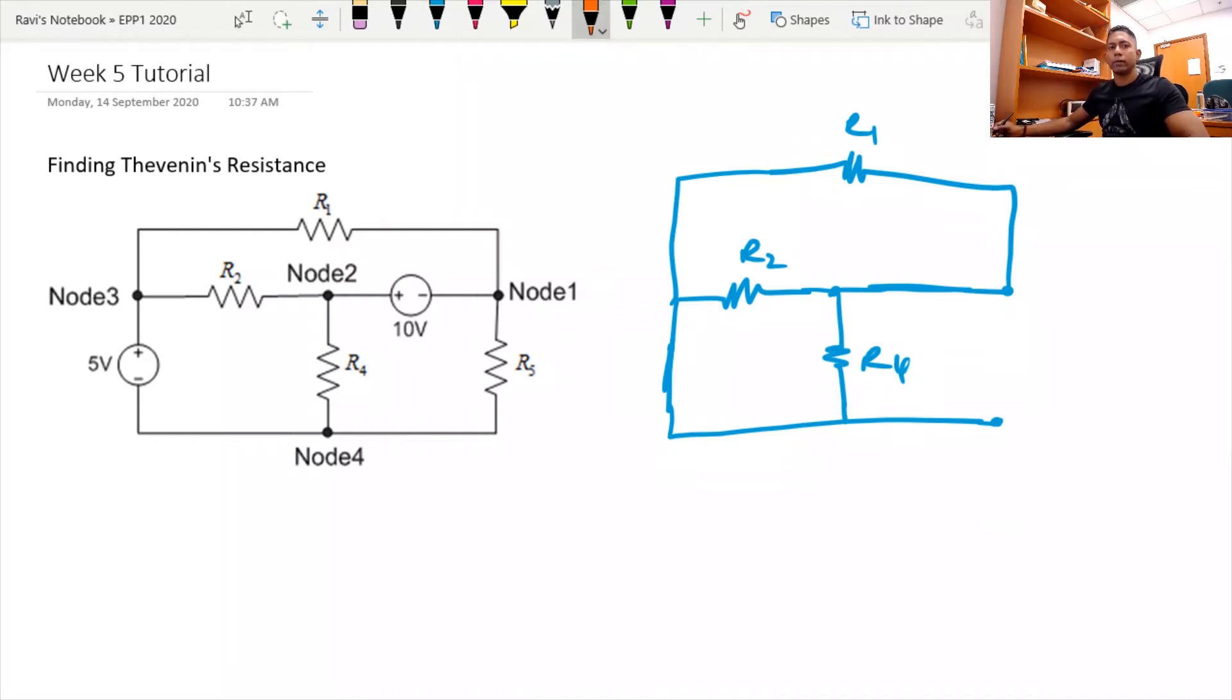Now the next step, that I've mentioned before in class, is to replace the load. So the load is this R5. Now that you've removed the load, imagine that there is a power supply in its place. So if I were to draw an imaginary power supply here, what you need to do now is